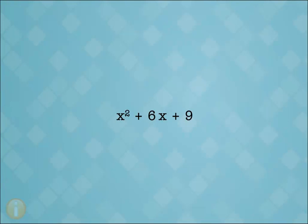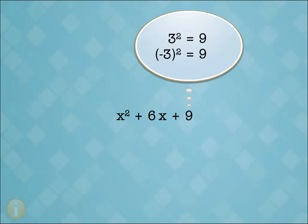Another example. To determine whether this is a perfect square, the first thing we check is the first term to see if the coefficient is 1. It is. Next, we check the last term to see if it is the square of an integer. In this case, the last term is the square of 3 and the square of minus 3. This means the trinomial meets the first test.